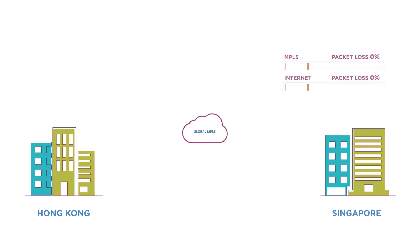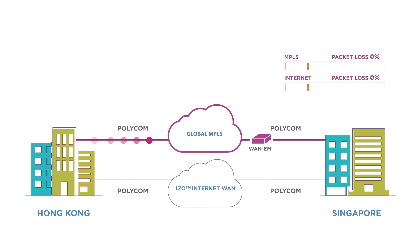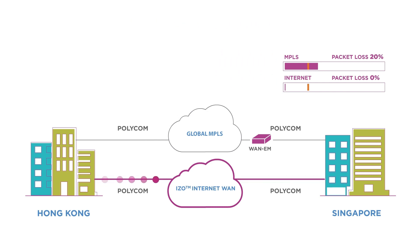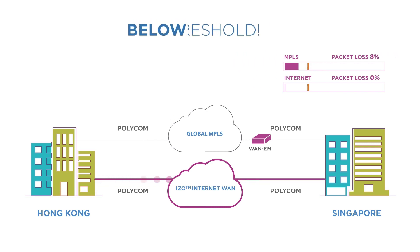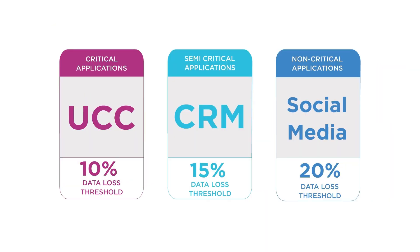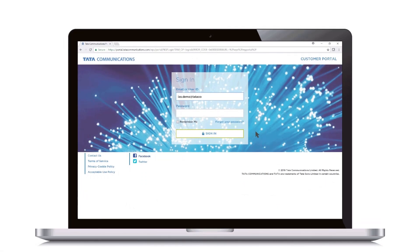Let's observe a use case where our locations in Hong Kong and Singapore are connected via MPLS as the primary link and ISO Internet WAN as a secondary link for Polycom traffic. If the packet loss over MPLS exceeds the predefined threshold, the Polycom traffic automatically switches to the Internet WAN. Once the packet loss falls below the threshold, traffic routes back to MPLS. You can specify the packet loss threshold based on business policy and application criticality.